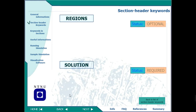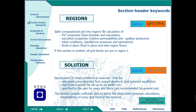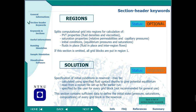Then we have REGIONS. Sometimes reservoirs are not uniform, so we divide the reservoir into regions — Region 1 or Region 2. Region 1 may have different porosity, Region 2 may have different porosity, and so on. This section is optional. The SOLUTION section is required because initial conditions are needed — calculated using specified fluid contacts. Initial conditions like initial pressure, initial temperature, initial oil saturation, and gas saturation are given in the SOLUTION section.